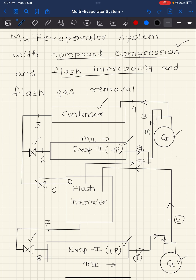The refrigerant coming out of evaporator one is assumed to be a dry saturated vapor. It enters compressor one and gets compressed to state two. It then enters the flash intercooler, where it is cooled to state three-a. Both states three-a and three-b are dry saturated gas, so this is complete intercooling — the superheated vapor at state two is fully desuperheated to dry saturated at state three.